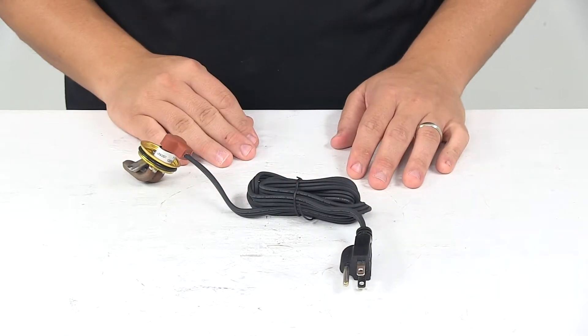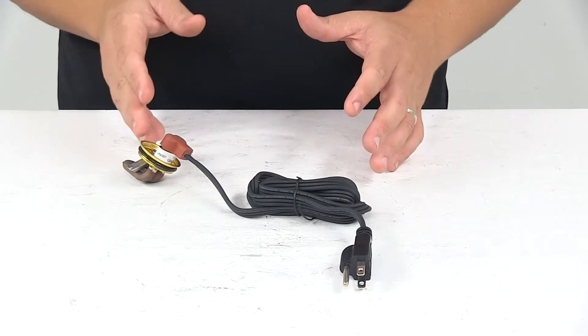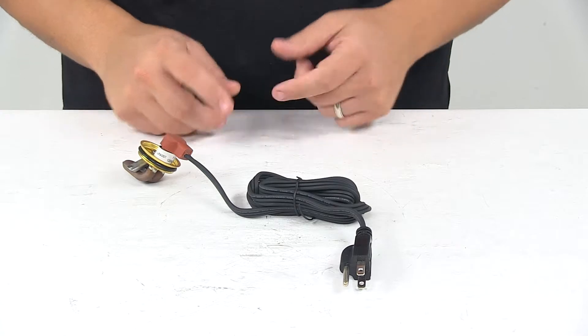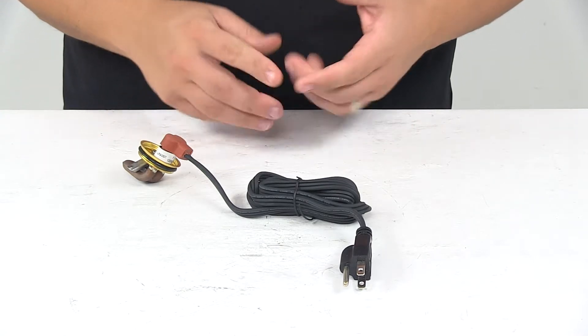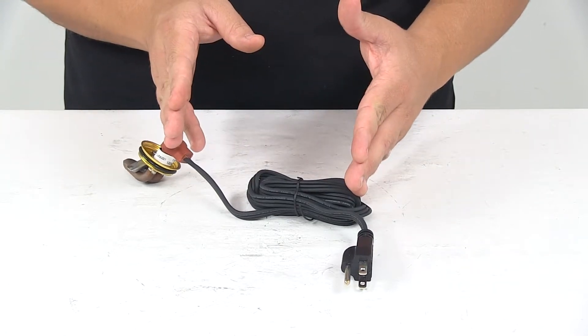The cord on this unit measures around five feet long. The removable design is really great because if you ever damage the power cord you don't have to replace the whole unit, you just need to replace the cord itself.